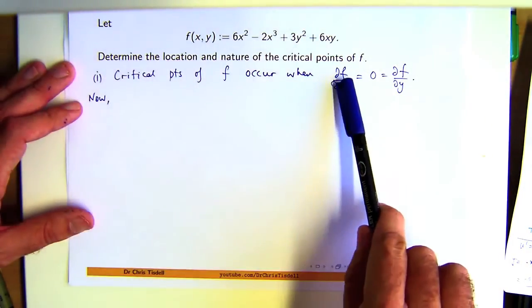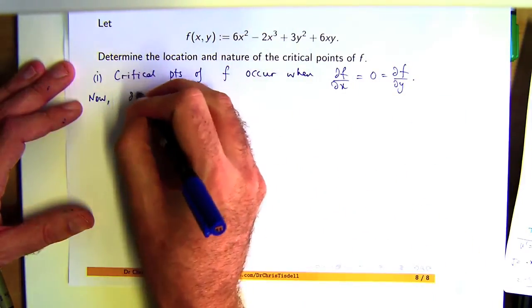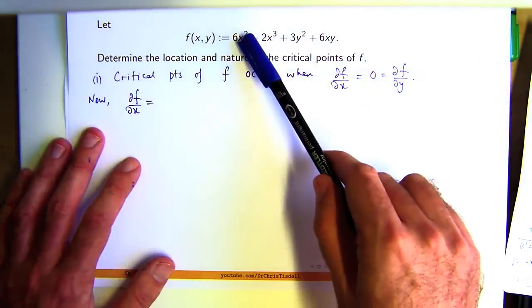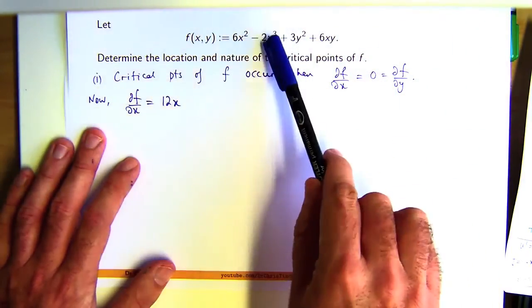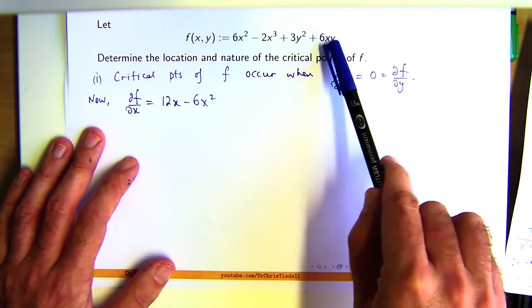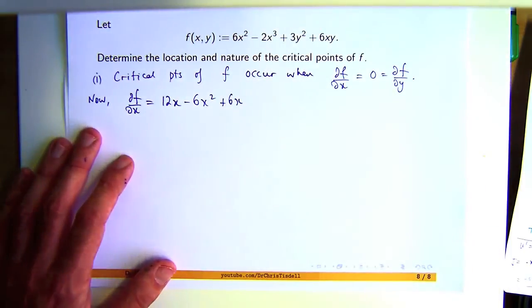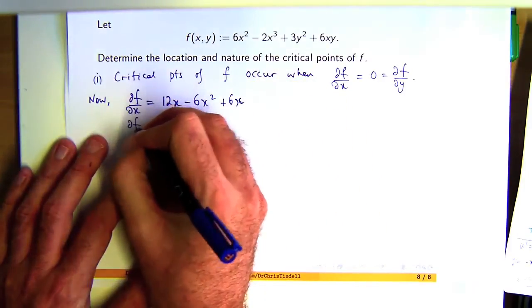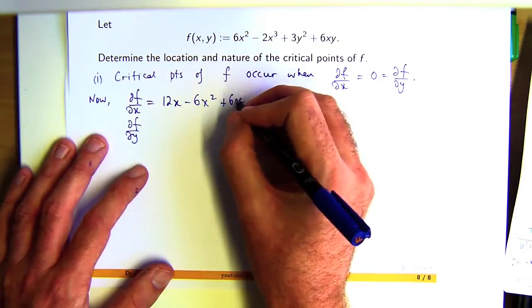Let's calculate df/dx. Imagine y is a constant and differentiate with respect to x. So that'll become a 12x, this will become a negative 6x squared, this will become 0, and this will become 6y.